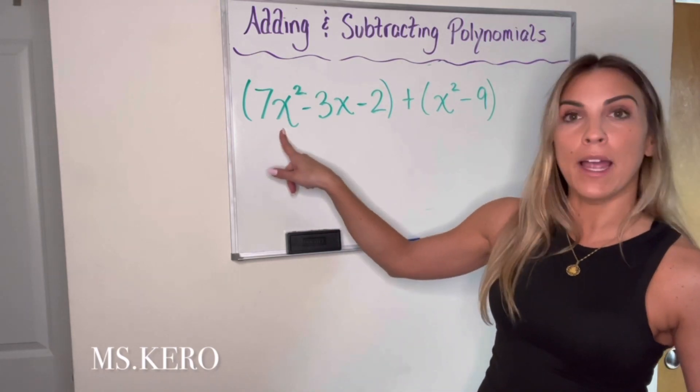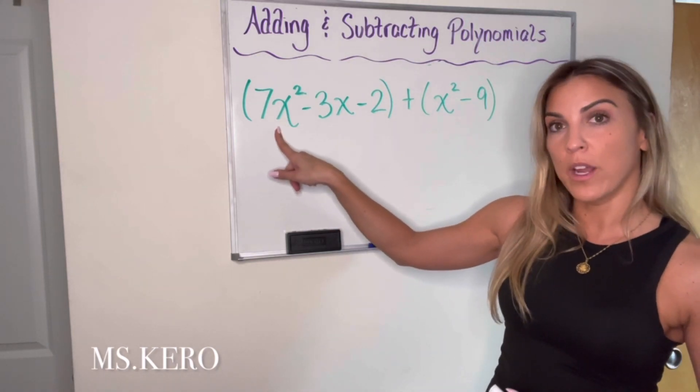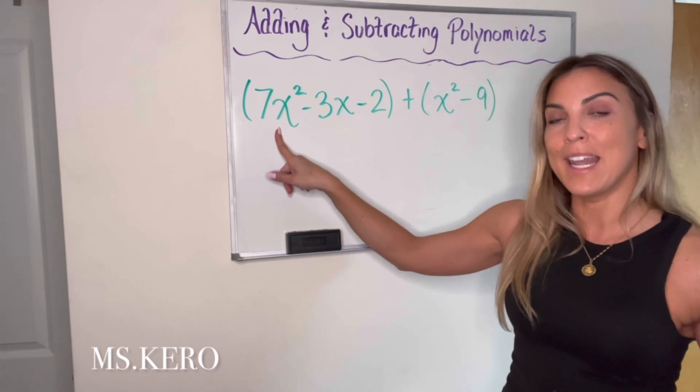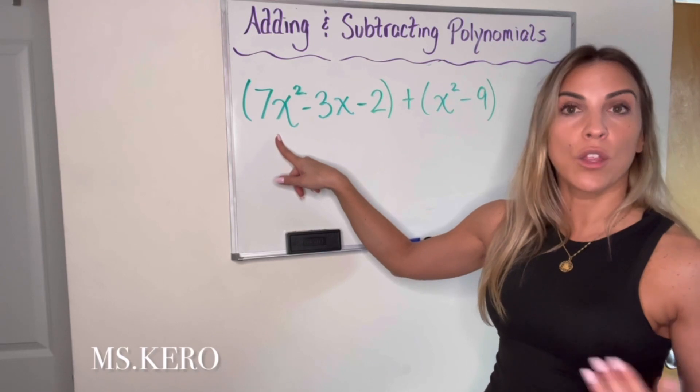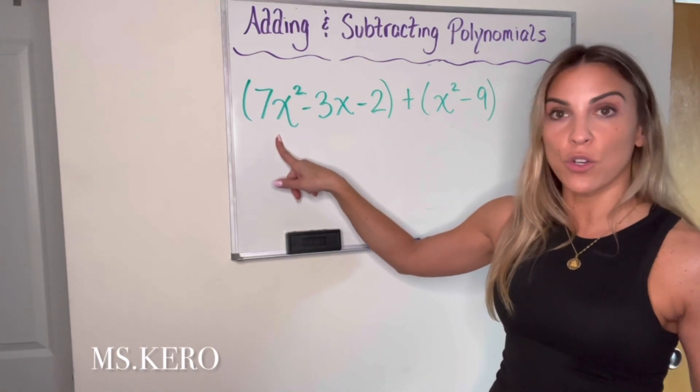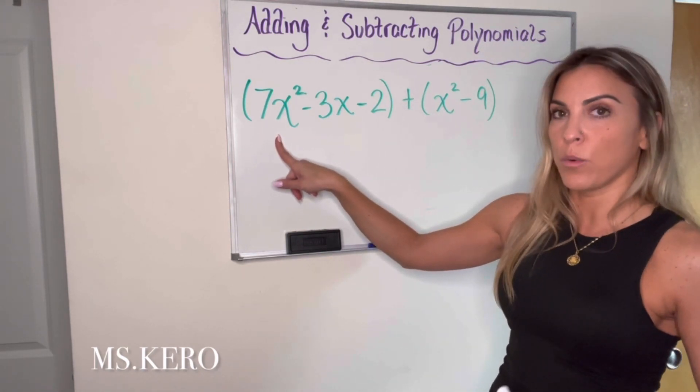So if I was looking for something to combine with the term 7x squared, it would also have to be an x squared term. So I cannot combine this first term with an x to the third power term or just x or a different variable. It has to be an x squared term.